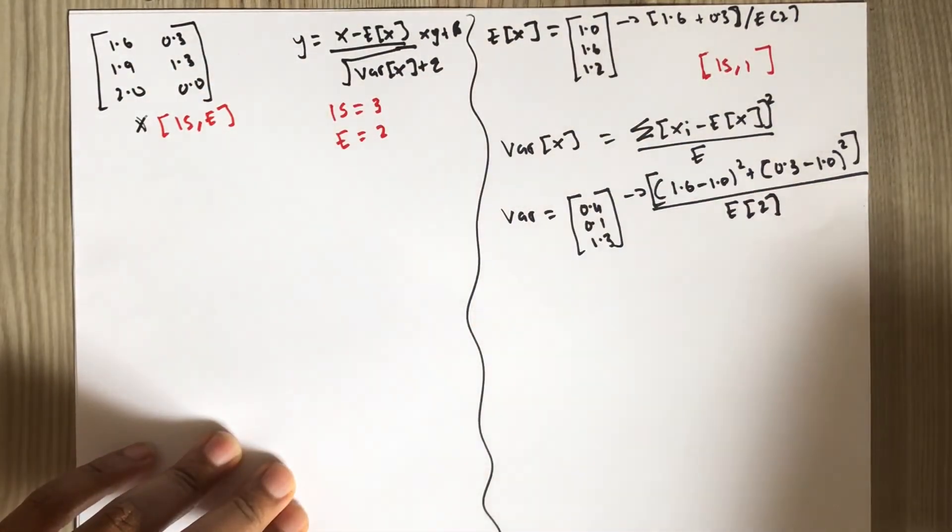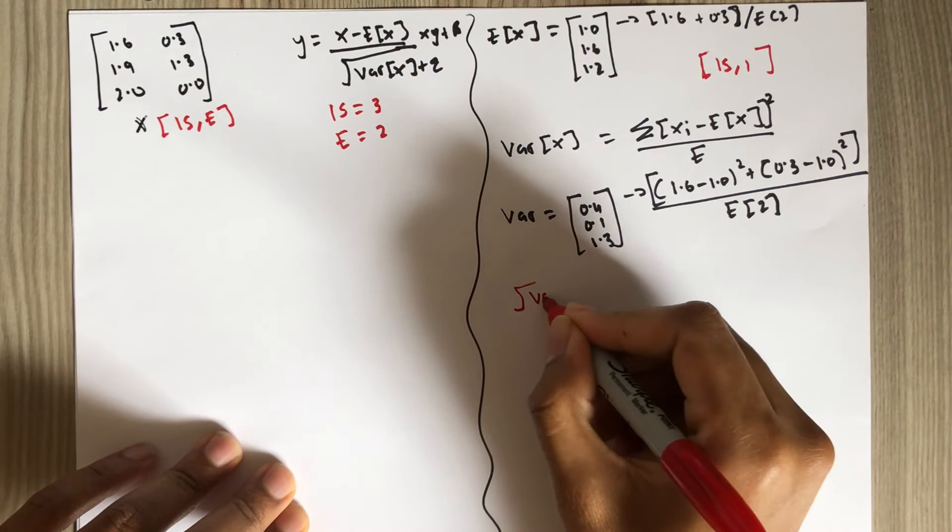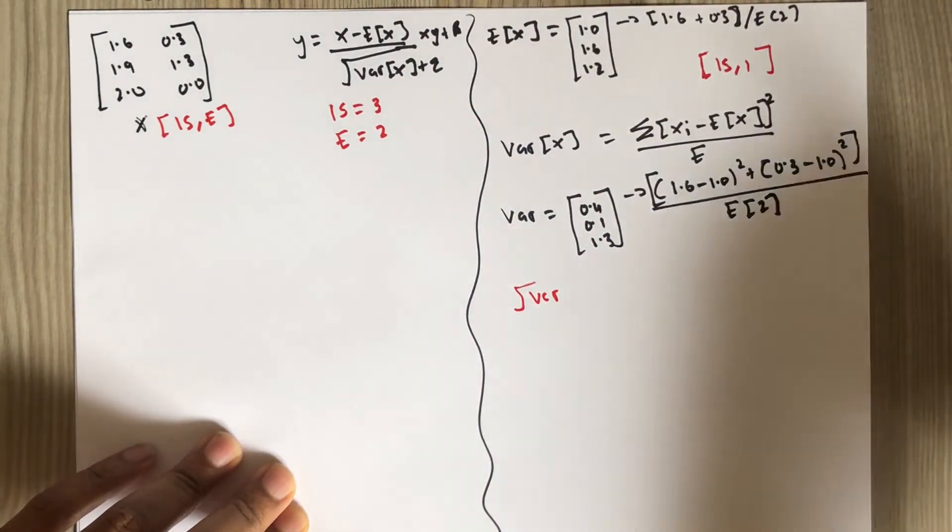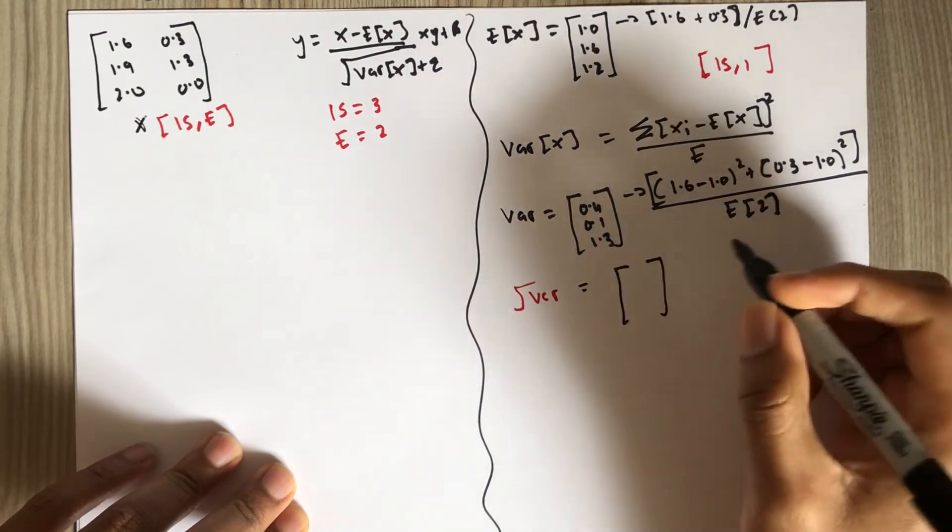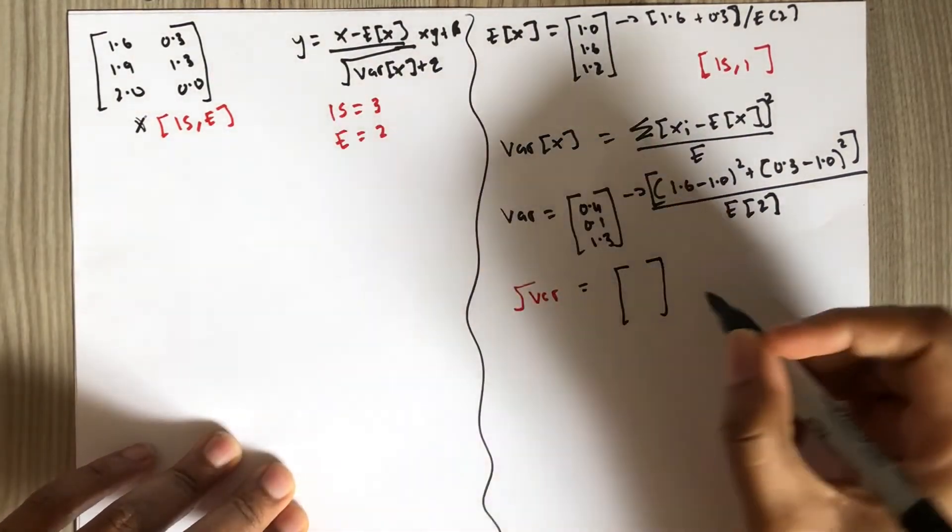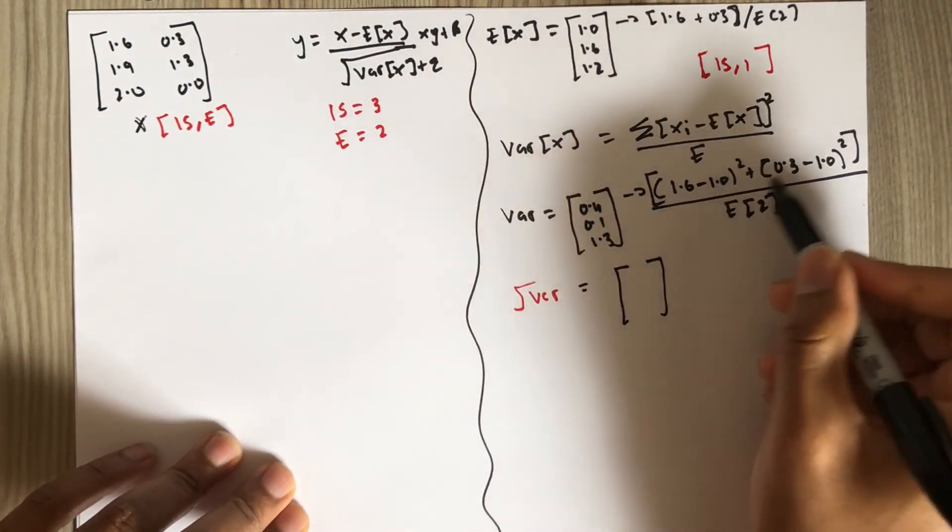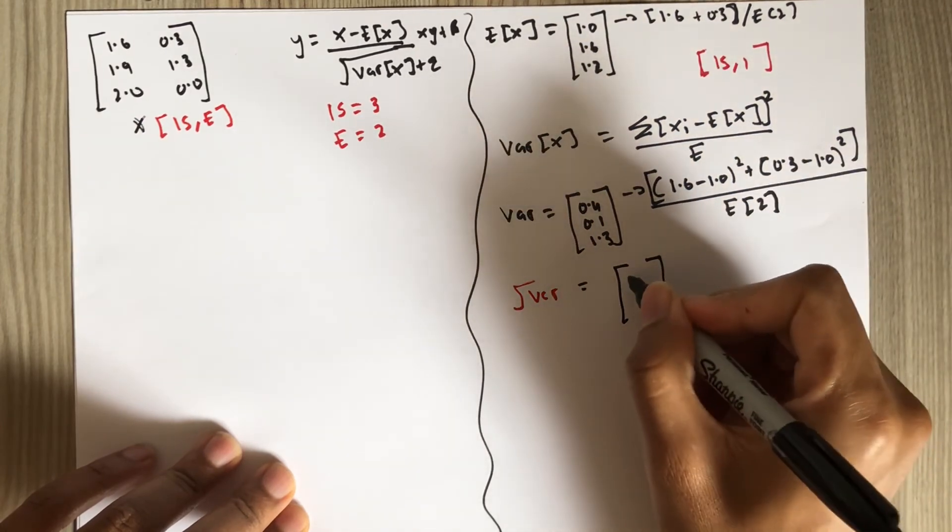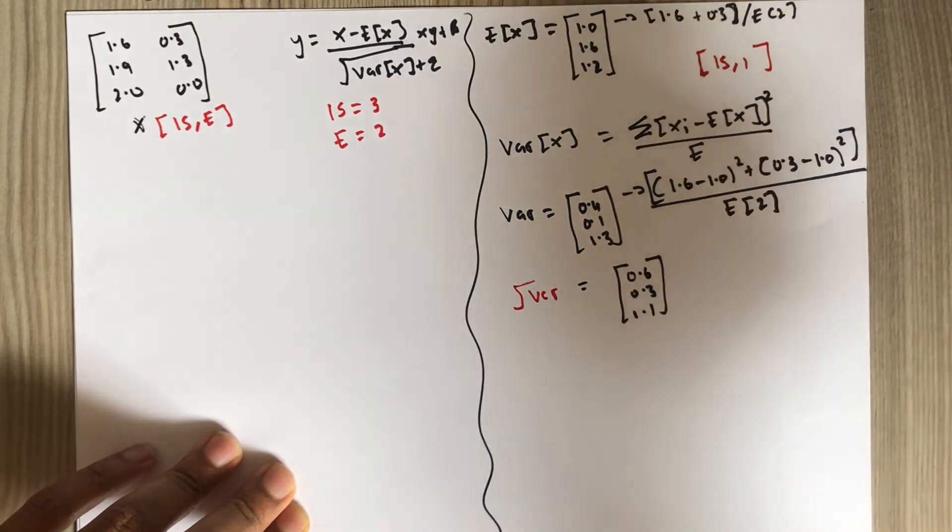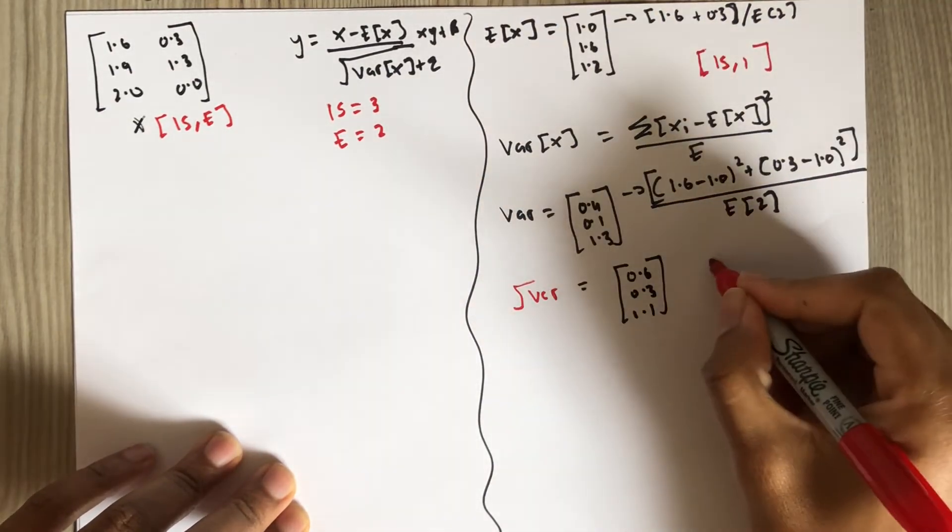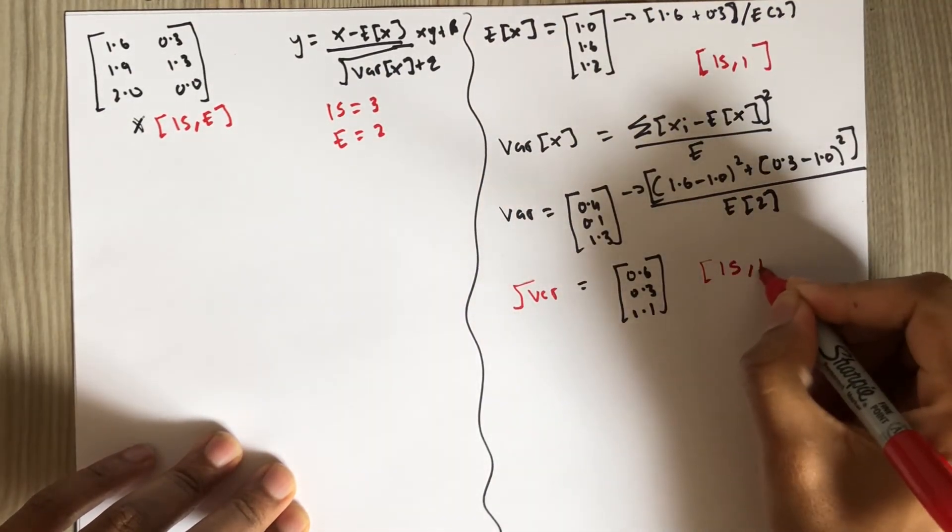Then we need to compute the square root of the variance. I've already done it. By the way, these numbers might not be precisely, I might make some mistakes while making these calculations. The variance, square root of variance dimension is is by 1.